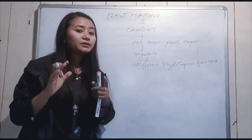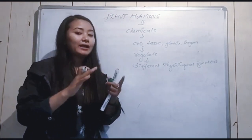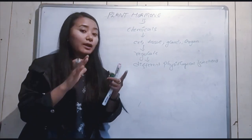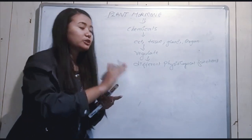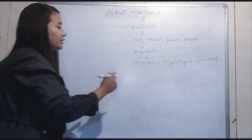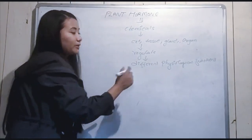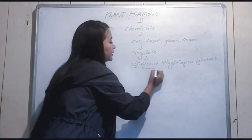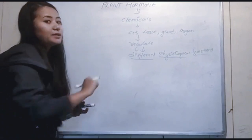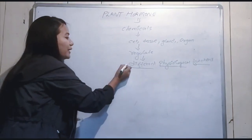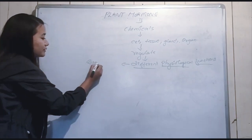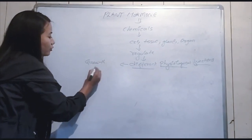Hormones are present both in plants and animals. Today we will talk about plant hormones specifically. In the case of plants, hormones mainly regulate growth and movement.